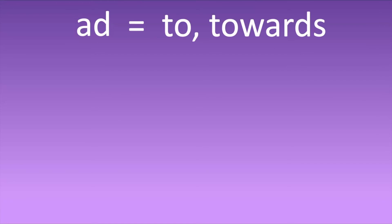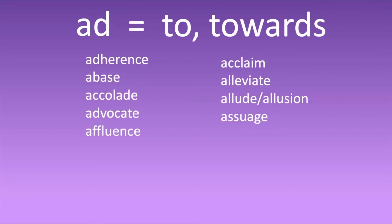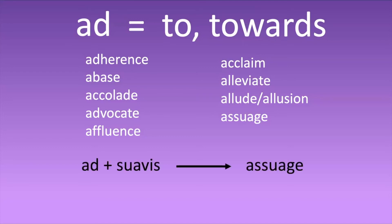That's all we have for -able. Now we're going on to the prefix AD, which means 'to' or 'towards.' I wanted to show a list of words we're going to cover because AD doesn't always appear as written — when the D meets another letter, sometimes it changes. So you can see that of all of these words, AD only appears twice. But AD is actually the prefix on all of them. For example, the last word 'assuage' is AD plus 'suavis' — instead of being 'ads,' it became 'ass.'